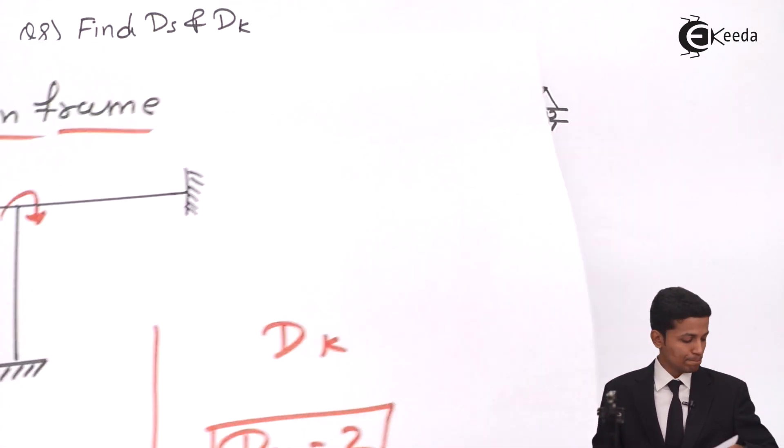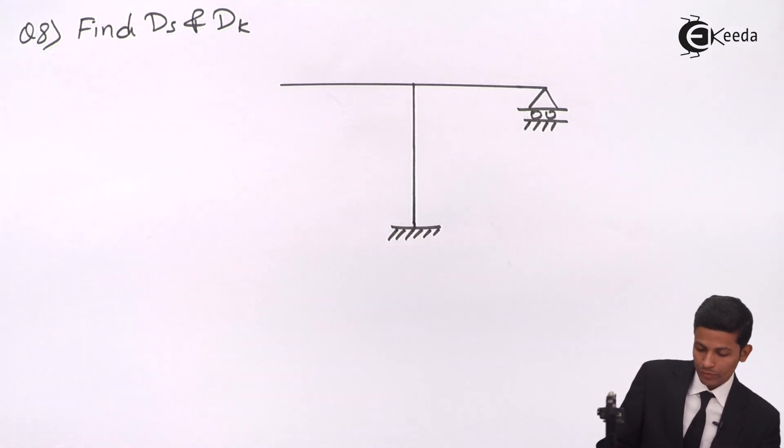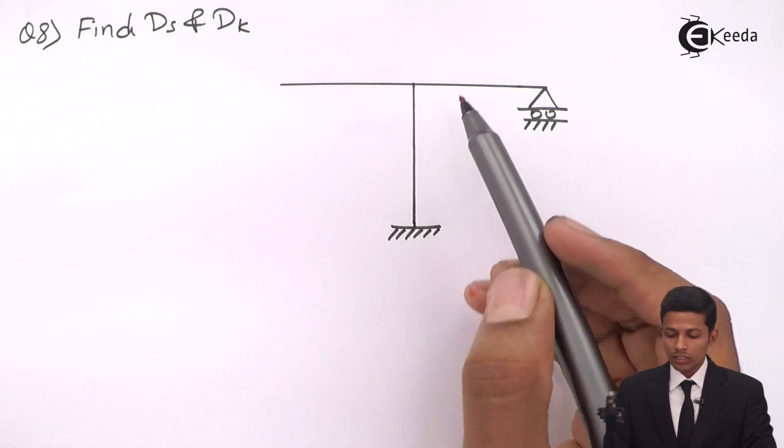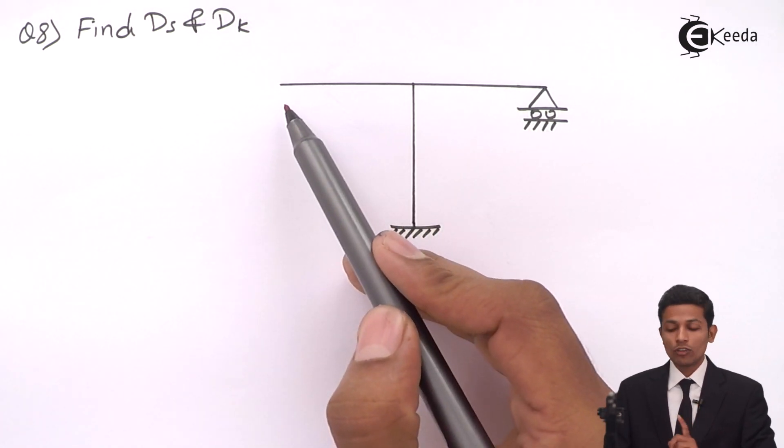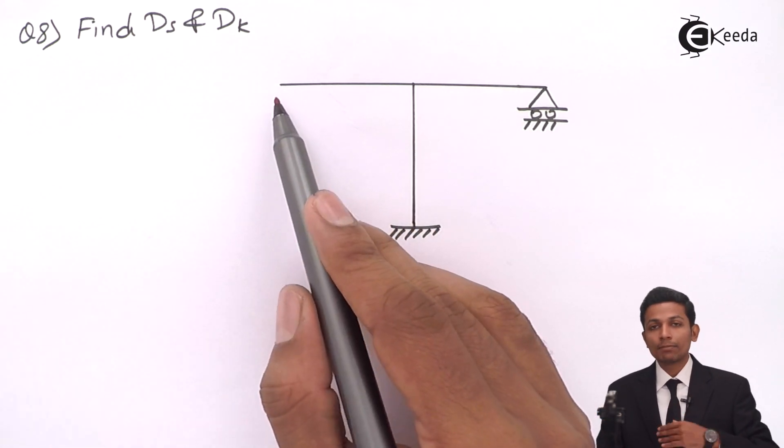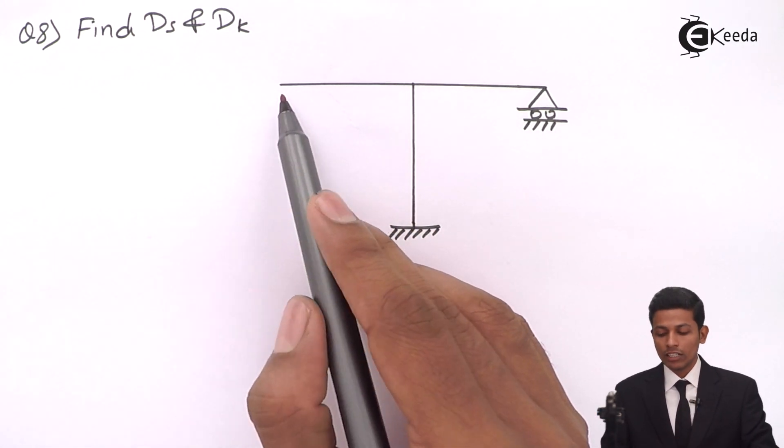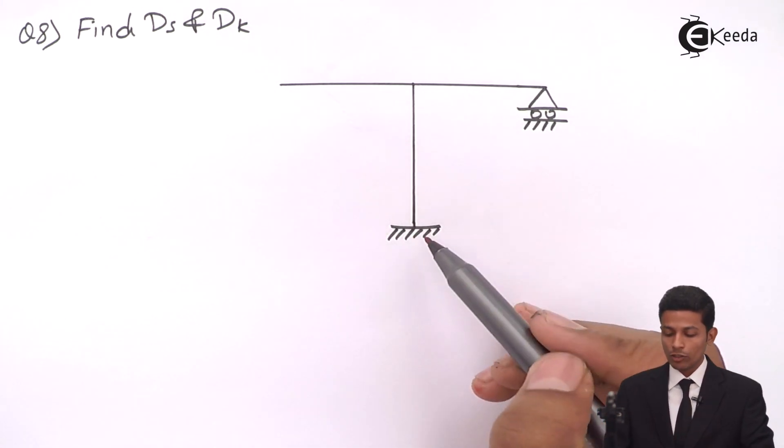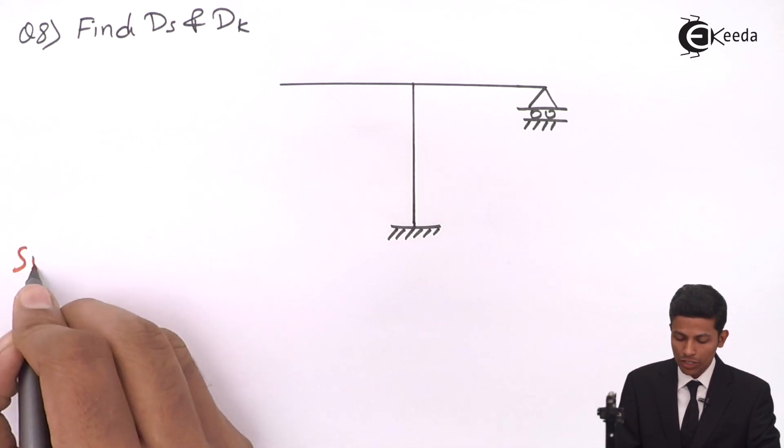Let's move on to problem number 8. Now see, in problem number 8 the question is given to us - this is a free end. Please see the previous videos where we explained what is kinematic indeterminacy, what are the couple loads, what are the moments that come in the free ends. Now see, this is a fixed support and this is a roller. Let's start with the solution.